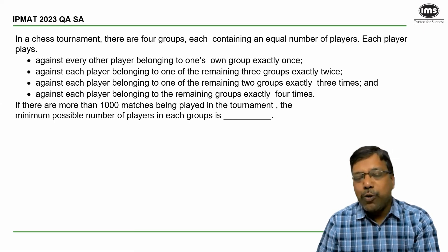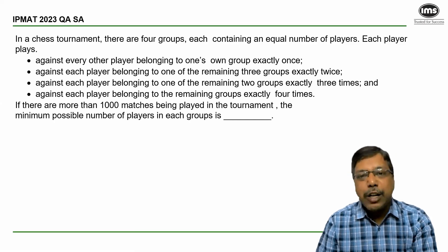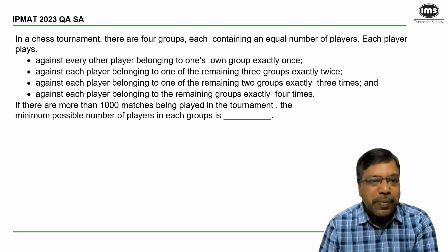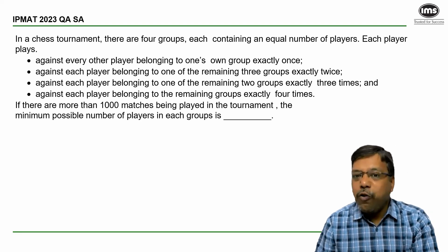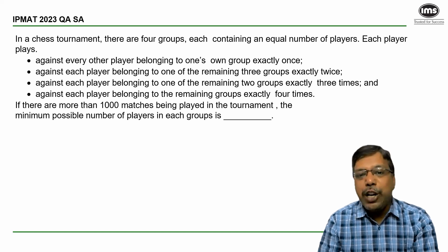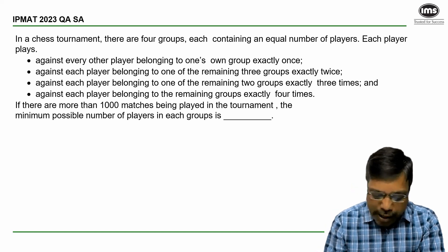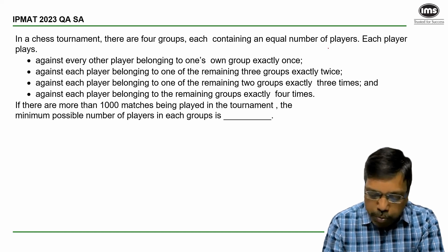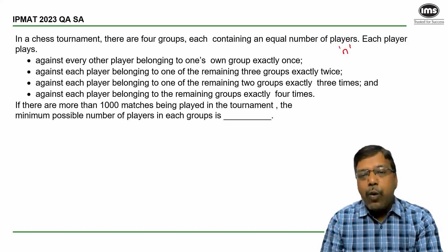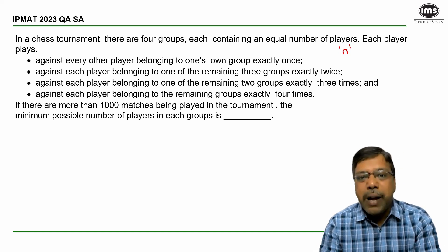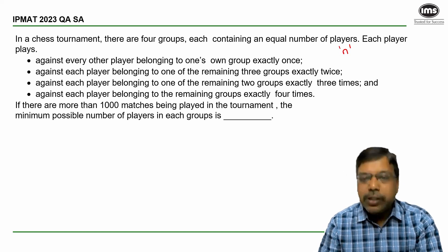Let's see how to answer this question on permutations and combinations which appeared in IPMAT 2023 short answer section. There are four groups and every group contains an equal number of players, so let us assume in each group there are n players. Now I have information about the number of matches played by each player.